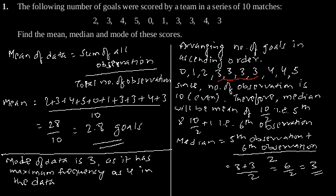So, the mode of data is 3, median is also 3, and mean is 2.8.